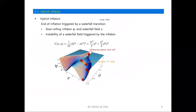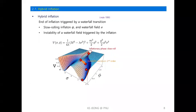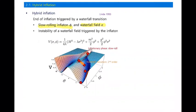Now let us move to our model. We consider hybrid inflation. In hybrid inflation there are two fields: one is the slow-rolling inflaton and the other is the waterfall field. In this scenario, inflation ends when the waterfall field becomes tachyonic. So the end of inflation is triggered by a waterfall transition.